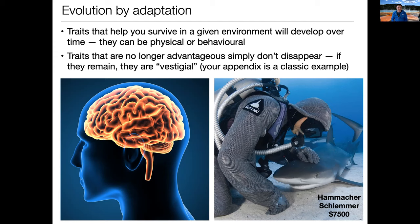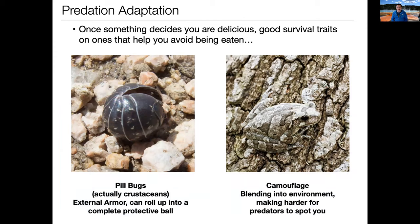Let's talk about adaptations that are to your advantage. Think about prey animals — predation adaptations are adaptations that your species has developed to help you survive being eaten by other species. Here are two classic examples. On the left are pill bugs, or roly polies — little segmented creatures that roll up into something about a quarter inch across. They're actually land-based relatives of crustaceans. They have armored segmented bodies with a very hard shell that protects them from external threats — that's a physical trait. Then the behavioral trait is: if you poke a roly poly, they roll up into a perfect little ball, protecting their entire body as much as they can.